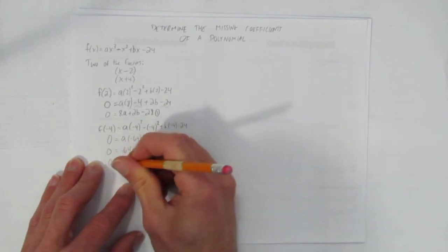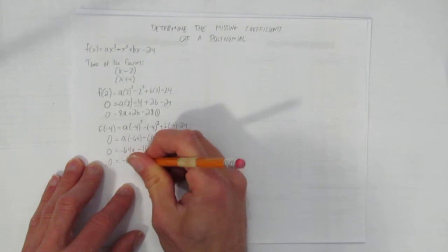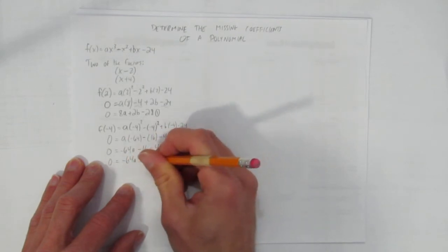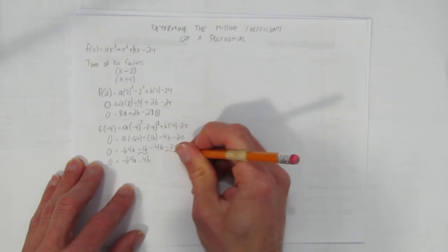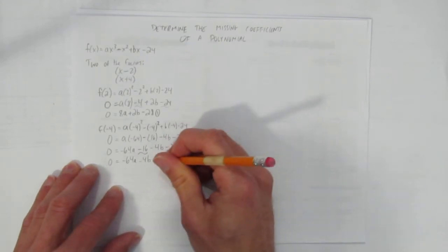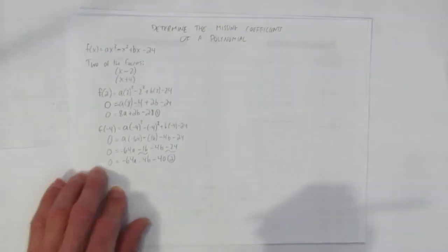And then I'm going to write the letters first, negative 64a, and then there's negative 4b. And now I'll combine these like terms, negative 16 and negative 24, makes negative 40. That's my equation 2.